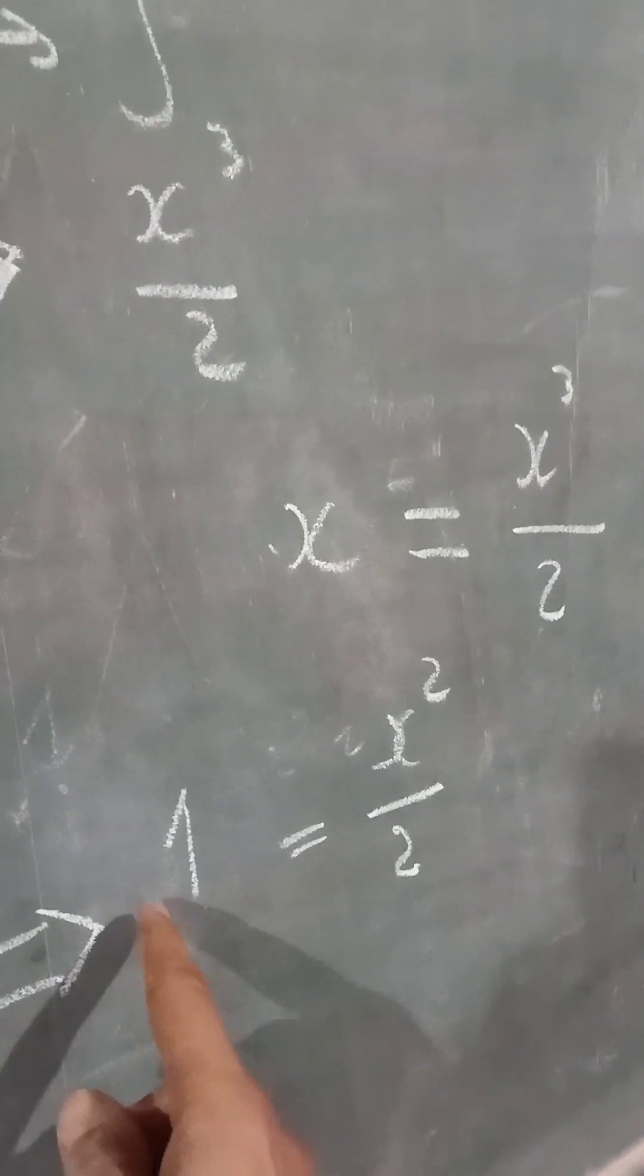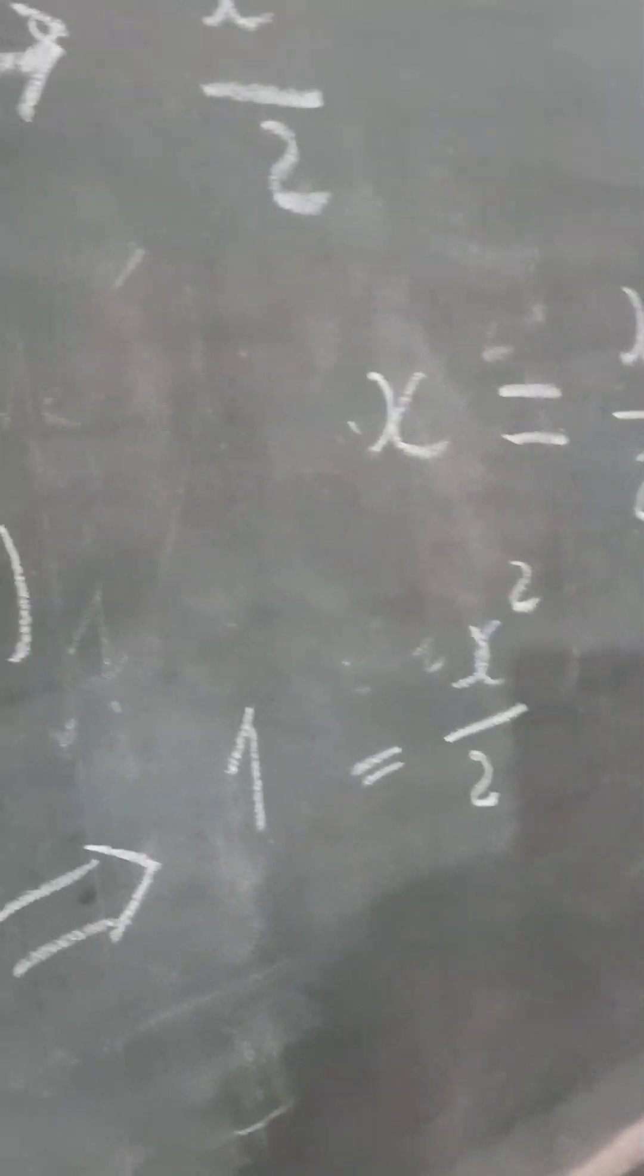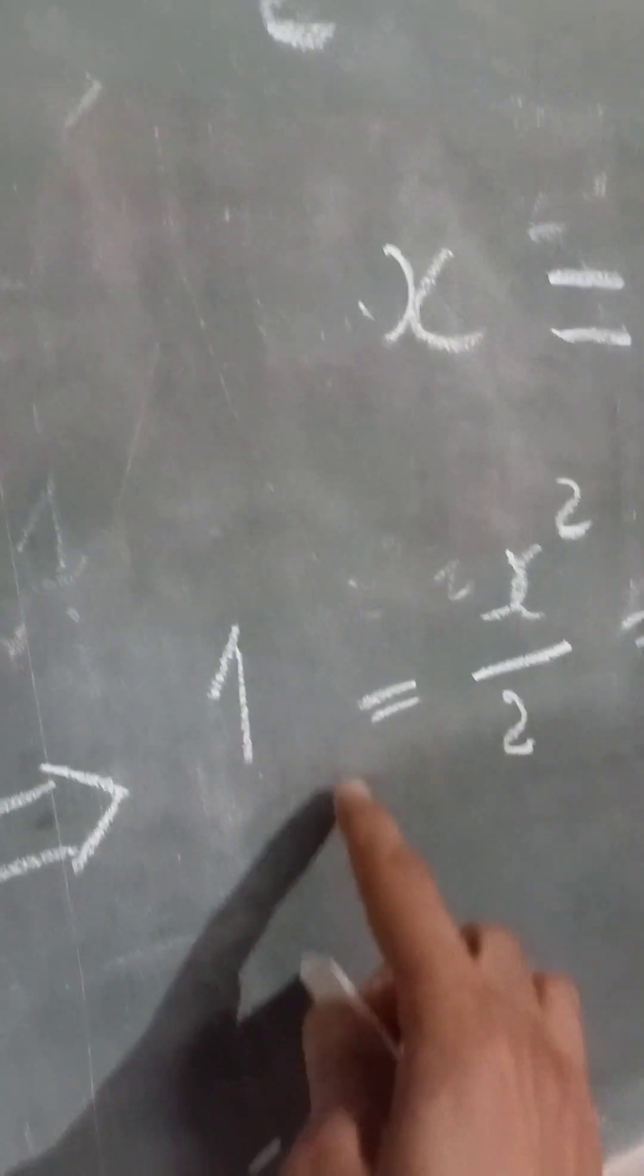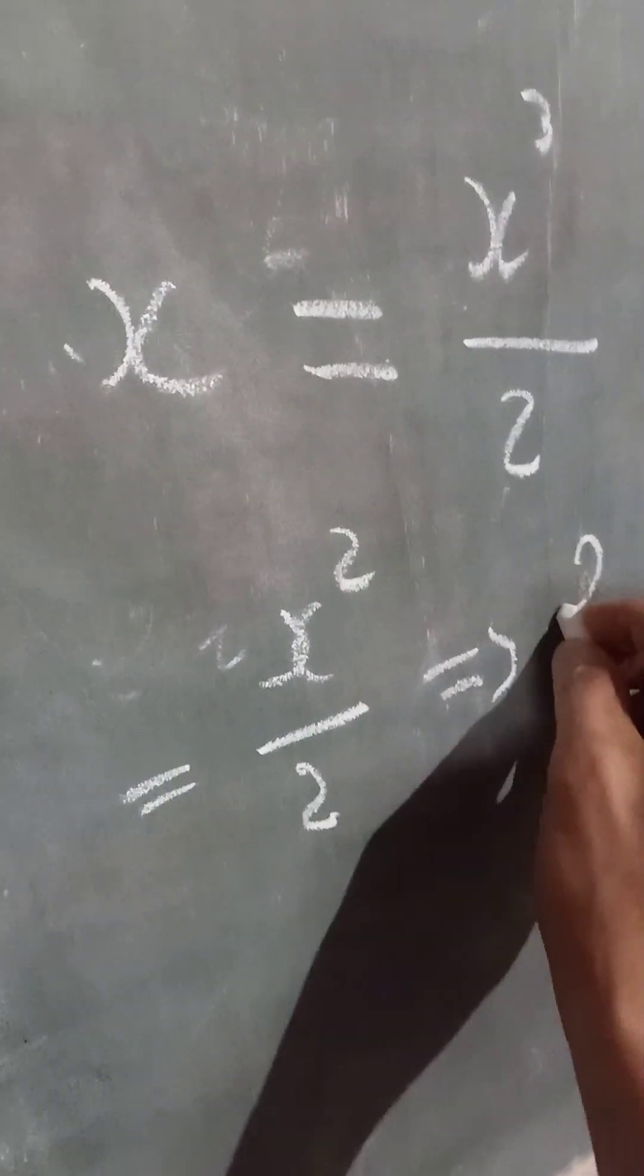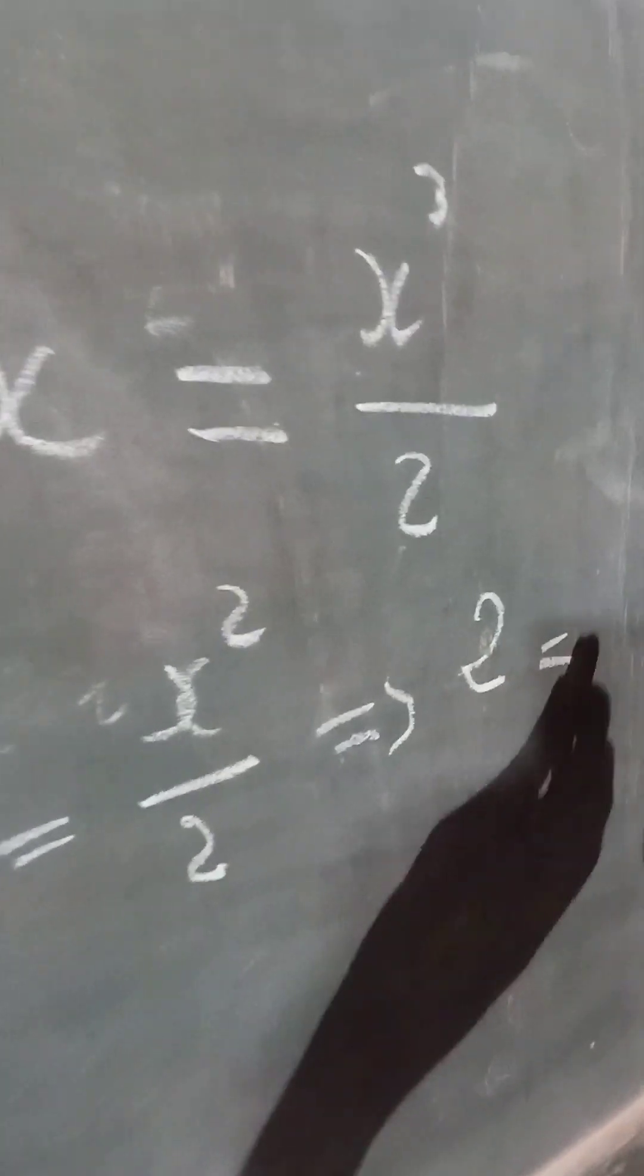Then we will multiply by 2 here and multiply by 2 here. So we will have 2 multiplied by 1, that's 2, equals x to the power of 2 divided by 2.